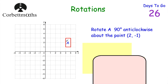Here we've got a grid and a rectangle A, and we've been asked to rotate A 90 degrees anti-clockwise about the point (2, -1). The first thing I would do is plot this point (2, -1) — that's the centre of rotation. We've been asked to rotate this rectangle 90 degrees anti-clockwise — that way — about that point (2, -1).